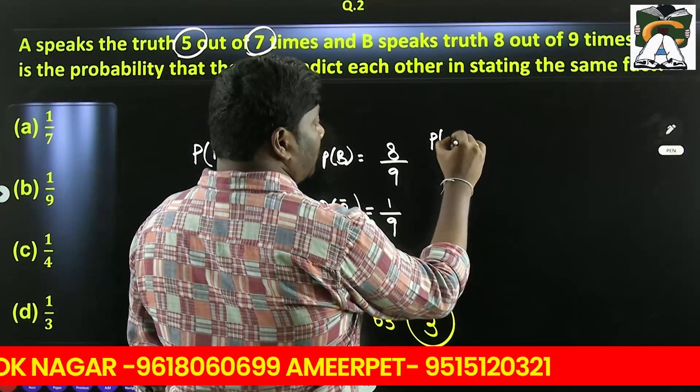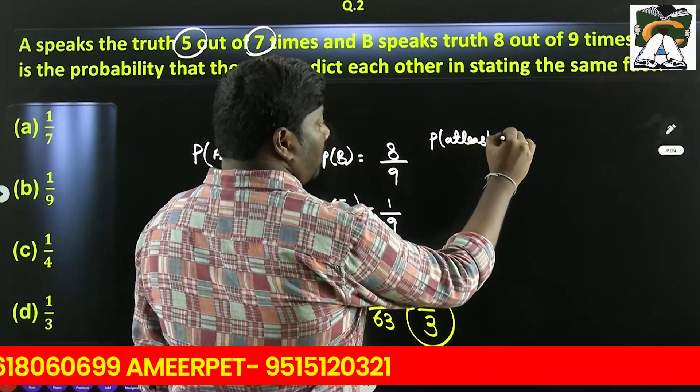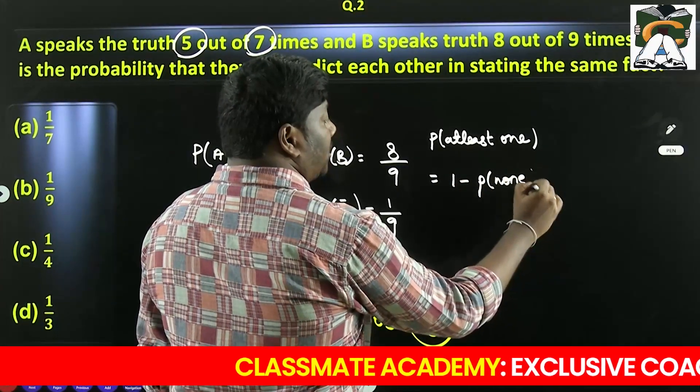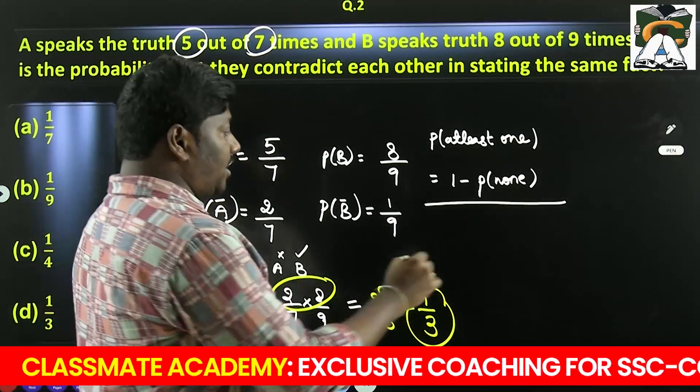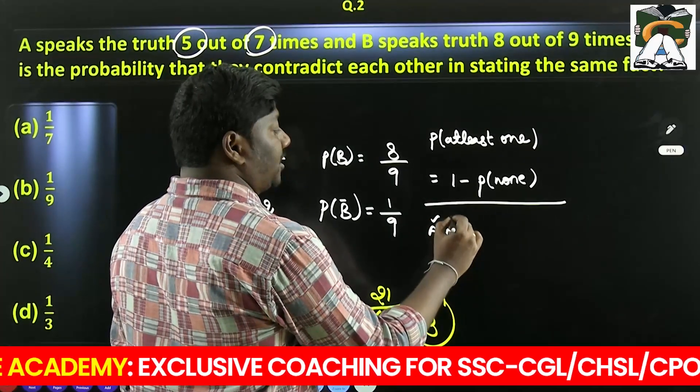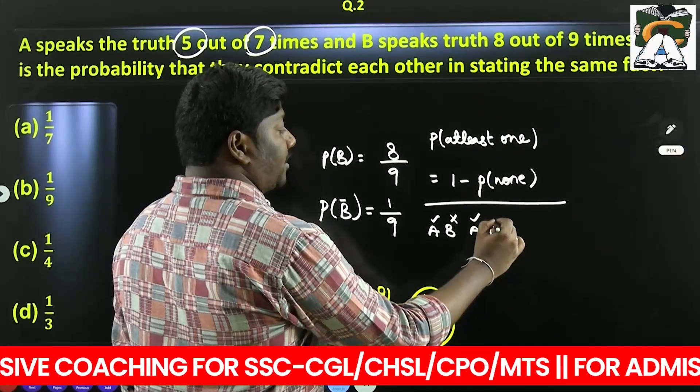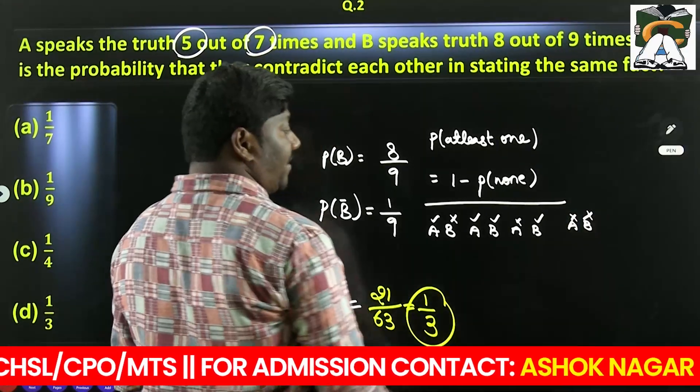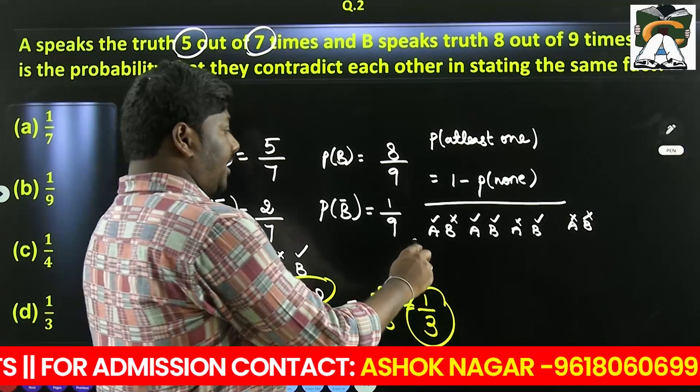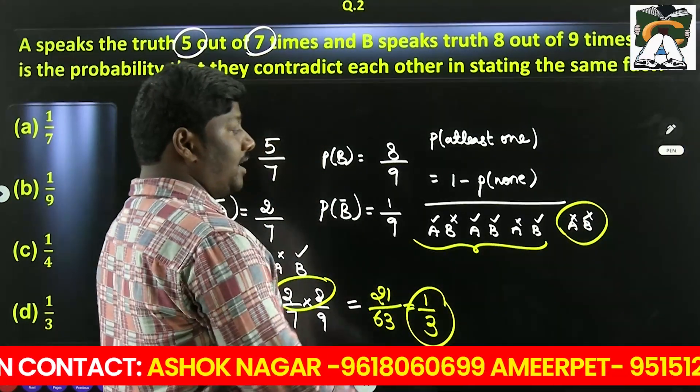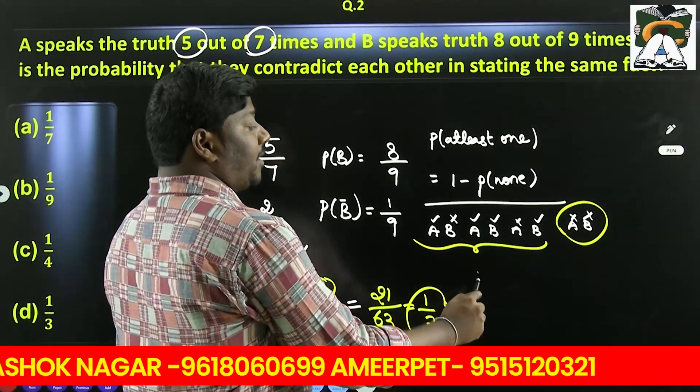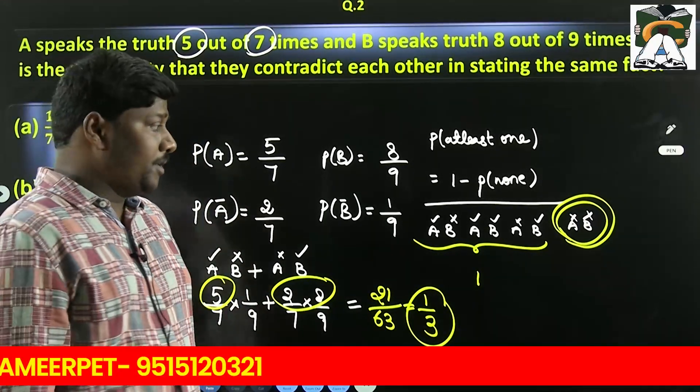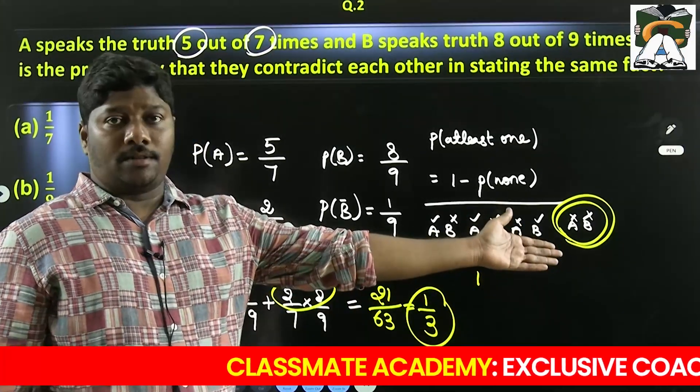At least one means 1 minus probability of none. Probability of at least one equals total probability minus probability of none, meaning neither is speaking the truth. At least one means we have 3 cases in this situation. A speaks the truth, B is not speaking. A is speaking the truth, B also speaking. A is not speaking, B is speaking. So actually 4 cases, at least one means 3 cases. So simply, rather than taking these 3 cases, 1 minus the last case. Because sum of probabilities is always 1. So instead of taking these 3 cases, we simply take 1 minus none, probability of none.